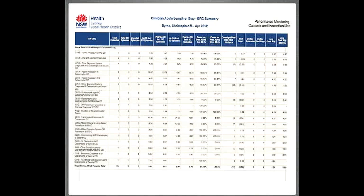This is my clinician length of stay summary from April of this year. It's got the DRG, how many patients there were, how many were same-day episodes, how many have been uncoded, and the average length of stay. For somebody having a hernia they're in for a day. For somebody who has a rectal resection and has catastrophic complications, for me with three patients, it averaged over two weeks. If they didn't have complications, the dramatic difference brings it down to six days.